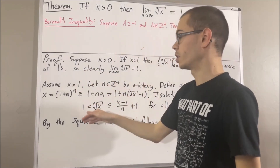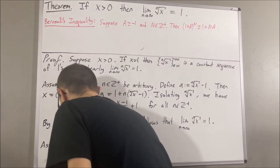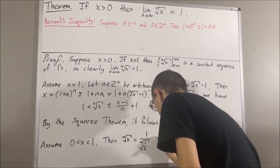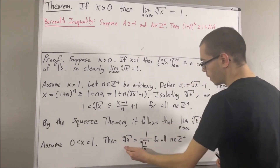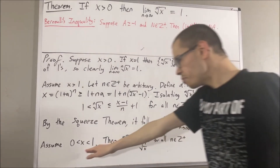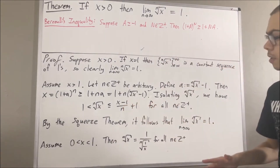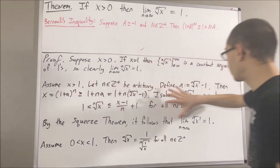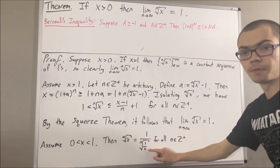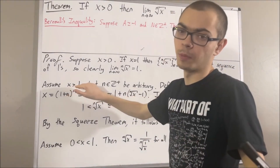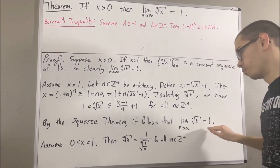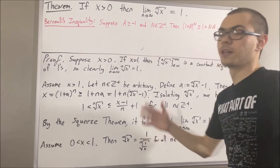Now, let's move on to our final case, which is that x is between 0 and 1. The observation is as follows: the n-th root of x is equal to 1 over the n-th root of 1 over x, for all positive integers n. Since x is between 0 and 1, we have that 1 over x is bigger than 1. So, if we apply the same argument as above to 1 over x, we have that the sequence of n-th roots of 1 over x converges to 1, since we have shown that for any real number bigger than 1, its n-th root converges to 1.